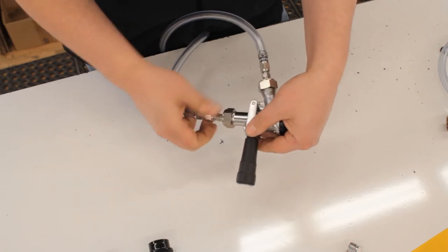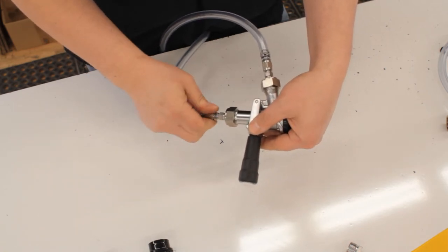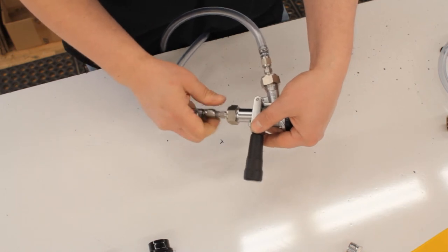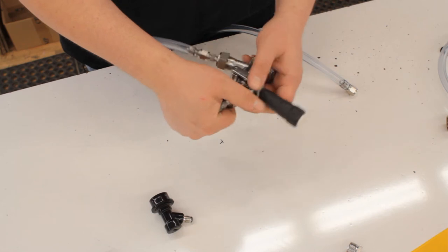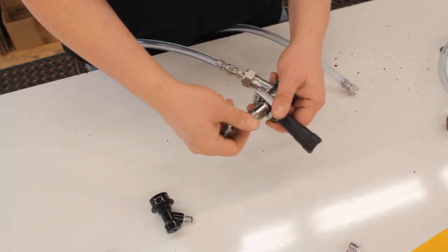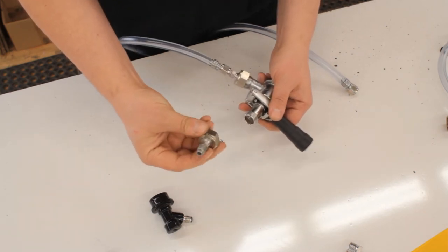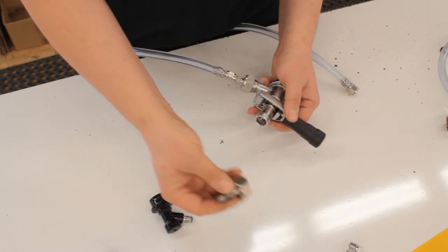To go back to homebrew, you unthread these and you go back to the ball lock connectors. Now this is the most inexpensive way to switch back and forth between them, with this set of tail pieces costing about $12.